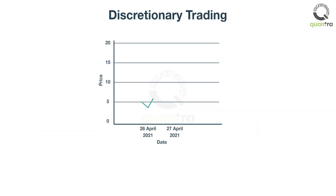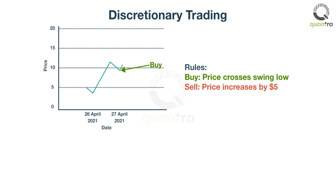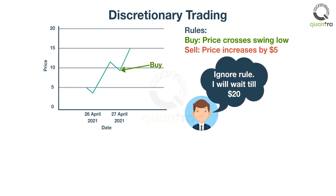Discretionary swing traders might define some rules to enter and exit a trade. However, as the name suggests, the trader might use his or her discretion over the rules to take or pass the trade. This decision can be influenced by recent experiences, by instinct, or by emotions.